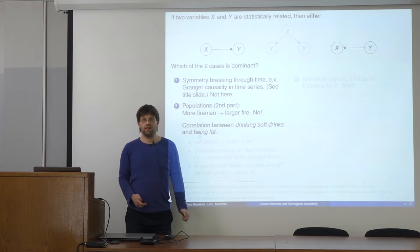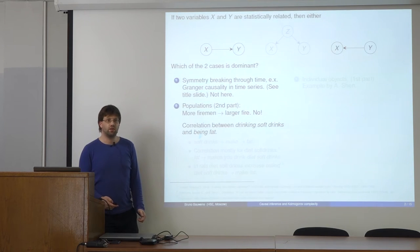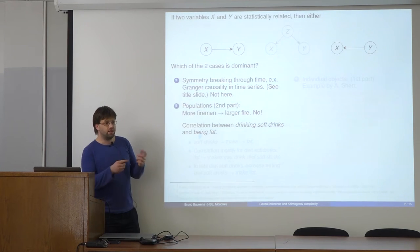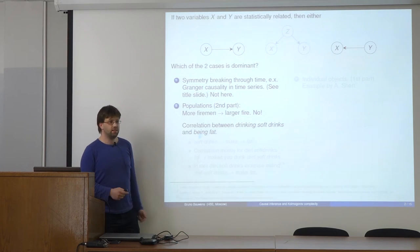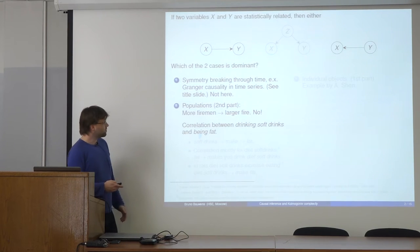There are many funny stories where people infer the wrong direction. For example, someone might claim that firemen cause a burning fire to be larger, because there is some correlation between large fires and many firemen being present. A wrong inference would be that firemen cause a fire to be larger.